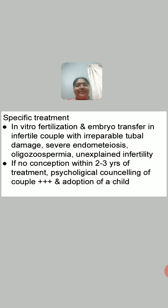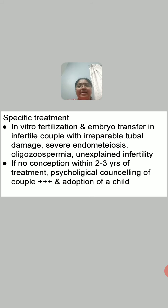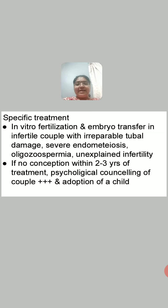The last part of treatment is specific treatment. In vitro fertilization and embryo transfer is used in infertile couples with irreparable tubal damage, severe endometriosis, oligospermia, and unexplained infertility. IVF is the last method of choice when all other treatments fail to give results and is most advisable in these mentioned conditions.